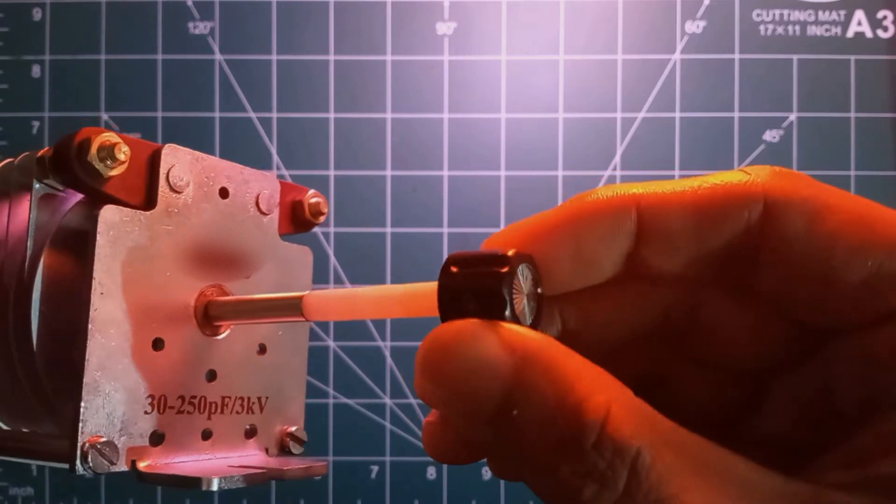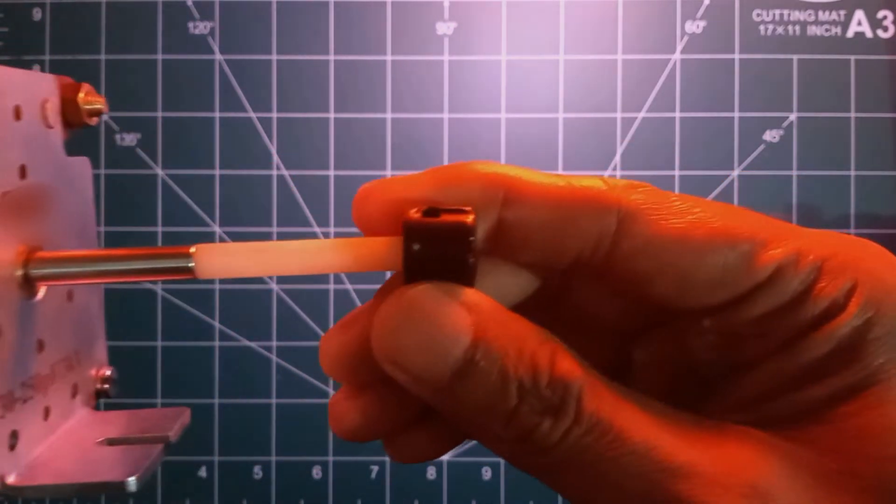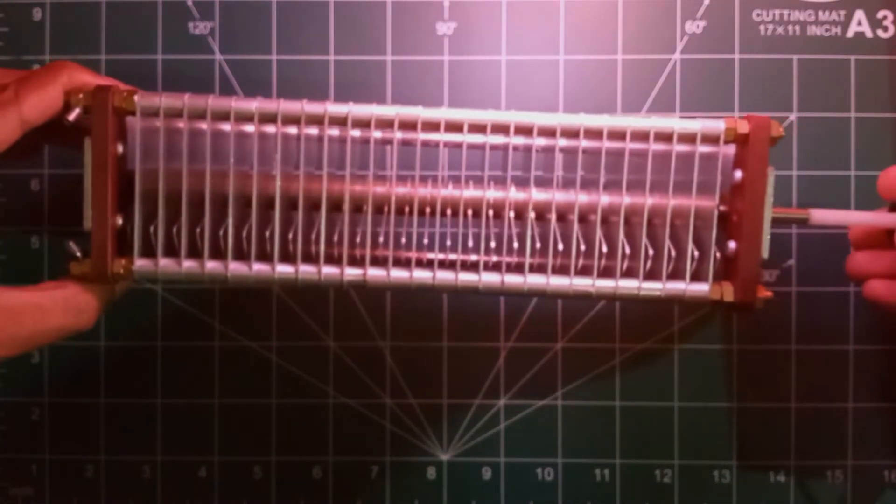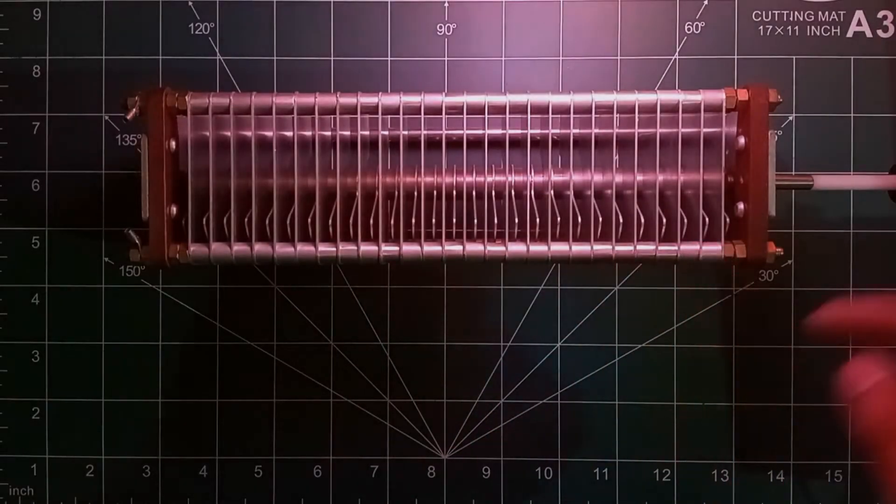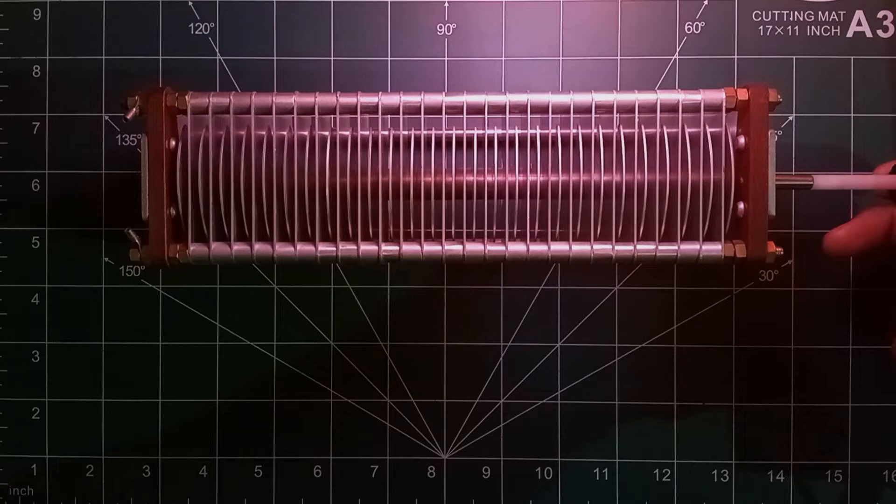A small knob is given on the front side so that we can tune this capacitor. There are 26 blades in the stator and around 27 blades in the rotor.